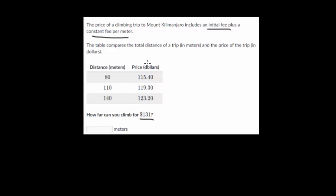So we need to figure out, when our price is at $131, what is our distance? And just like the previous problem, I want to figure out what I'm jumping by in my distance, and then how much am I jumping by in price. Because I know that as I increase my distance, my price goes up proportionally - it goes up at a constant rate.